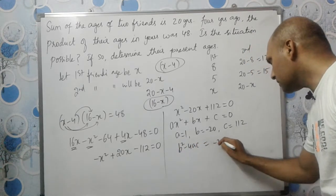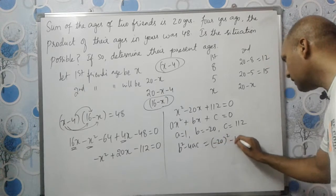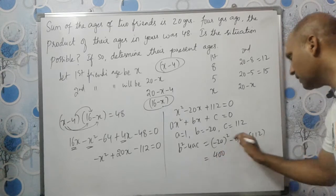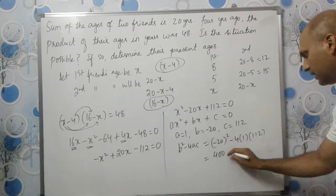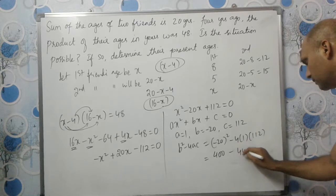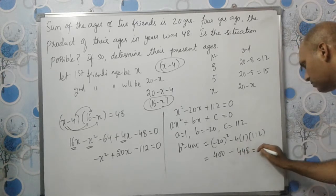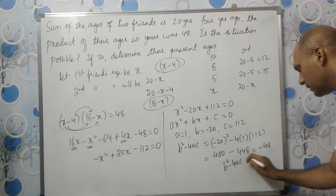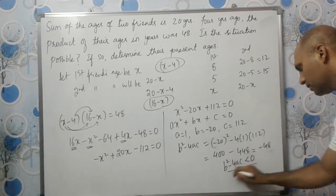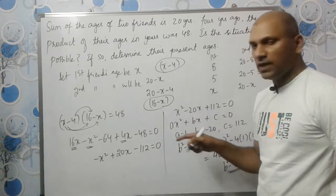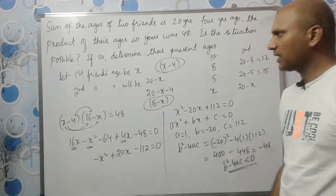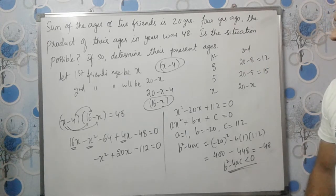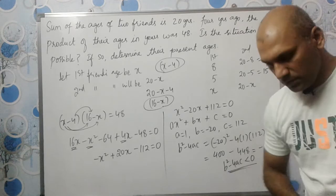So B squared minus 4AC equals (minus 20) squared minus 4 times 1 times 112, which gives 400 minus 448, which equals minus 48. Since B squared minus 4AC is less than 0, the equation will have imaginary roots and this situation is not possible. I hope you understood this problem — see you in the next video.